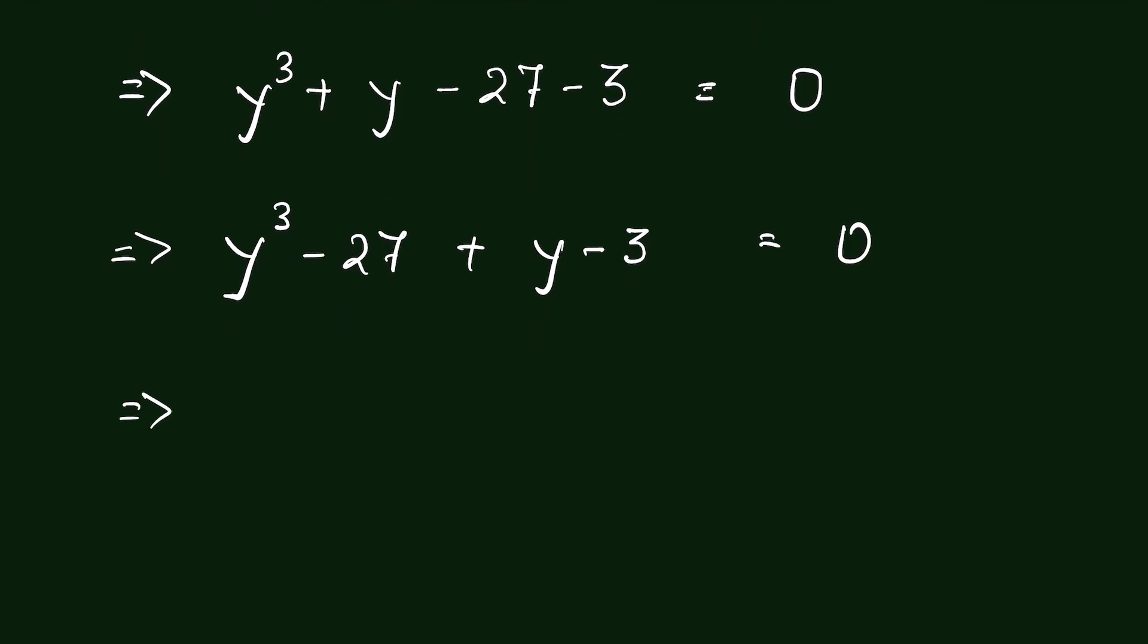Or we can write y cube minus 27 as 3 cube. Let's write them together, then plus y minus 3 is equal to 0.